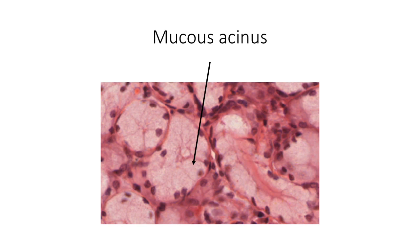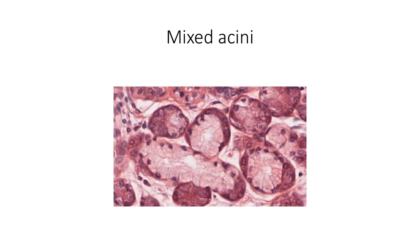Mixed acini are lined by both serous and mucous cells. Although both types of cells are arranged side by side in the acinus, routine fixation methods used while preparing H&E sections result in swelling of the secretory granules of the mucous cells, which pushes the serous cells to the periphery so that they appear as crescent-shaped serous demilunes. This is a fixation artifact, but this appearance of a mucous acinus with a serous demilune is the classical appearance of a mixed acinus in an H&E stained section.